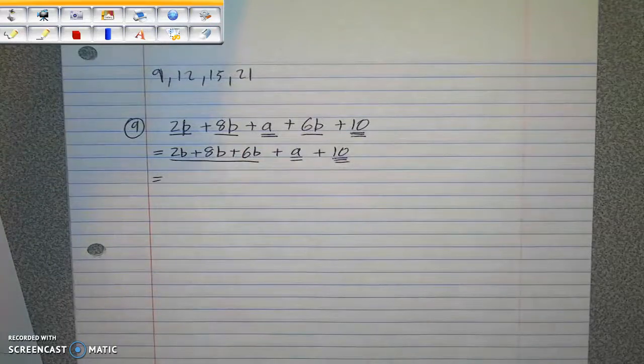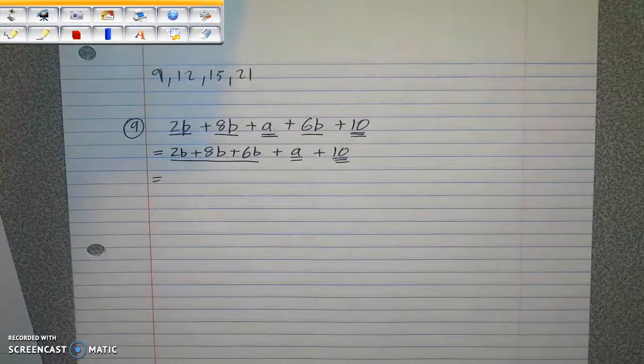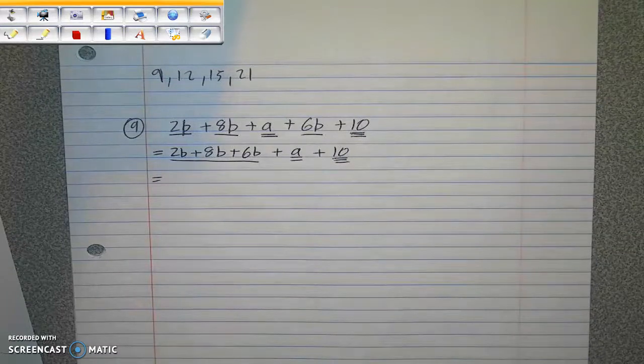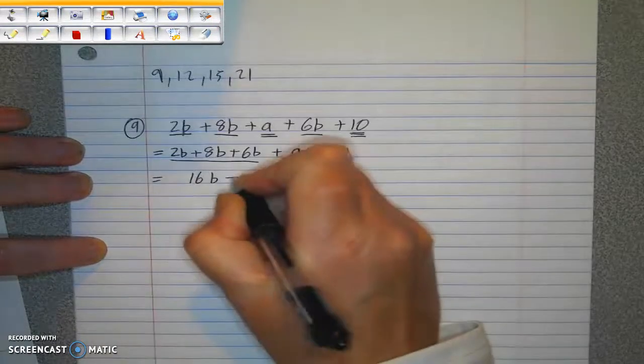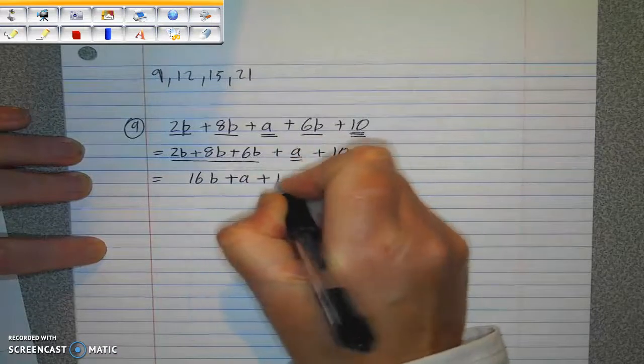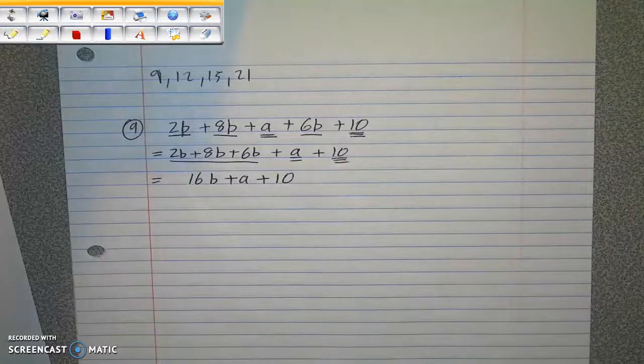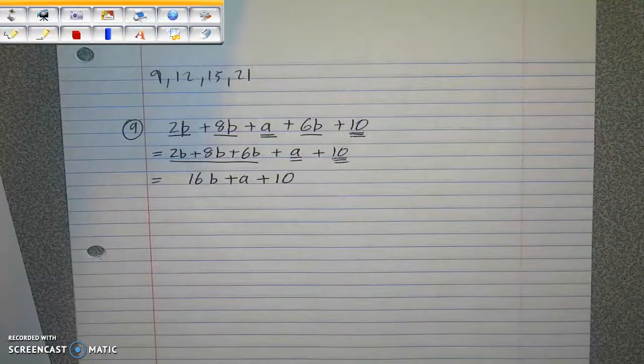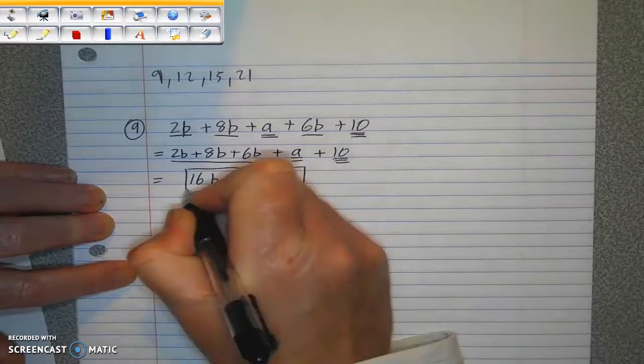After gathering all the B's together, you can add them. I have 2B, I have 8B, and I have 6B. Think of them as anything that begins with a B. Bananas. So I have two bananas, I have eight bananas, and I have six bananas. That means altogether I have 16 bananas, and then I have an A, and then I have 10. I cannot combine the A with the B because they are unlike terms. And I cannot combine the 10 with either of them because the 10 doesn't have a variable. This is as simple as the expression gets.